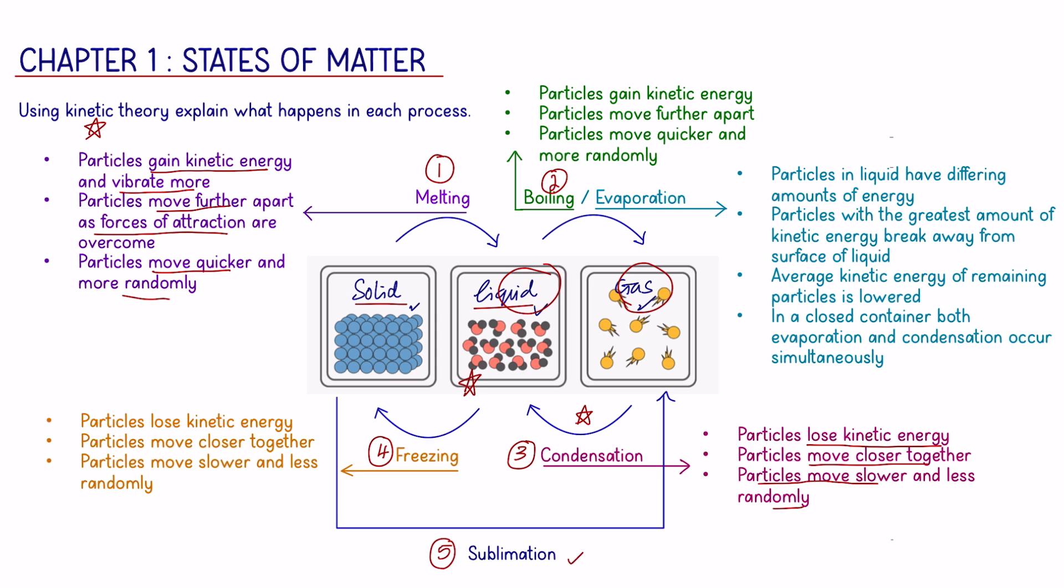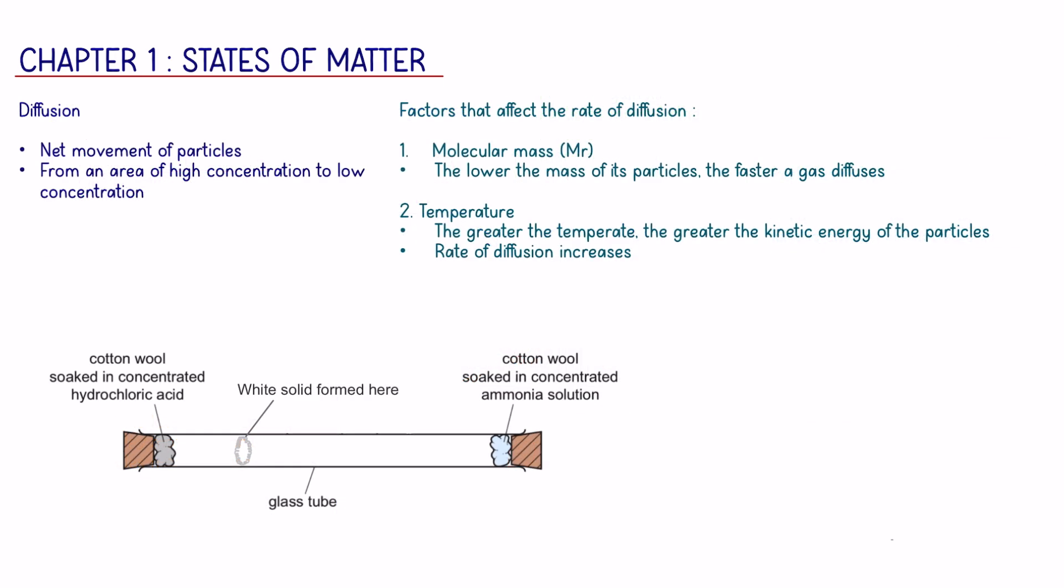Using the kinetic theory, there is another thing that you have to remember, which is how does evaporation take place. Now, evaporation only happens at the surface of a liquid. The particles in the liquid have different amounts of energy. The particles with the greatest amount of kinetic energy, which is at the top of the surface, will break away from the surface, which then leaves behind the particles that have lesser kinetic energy. And you should know that in a closed container, both evaporation and condensation can occur simultaneously.